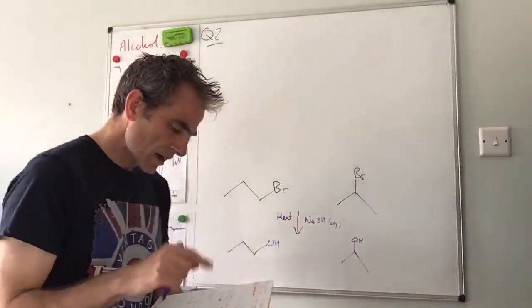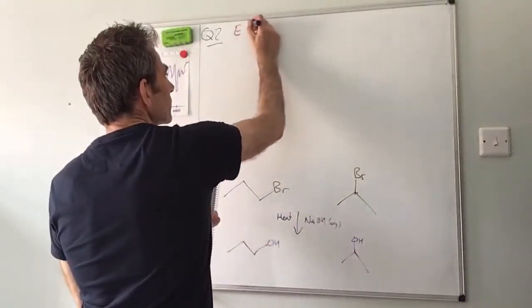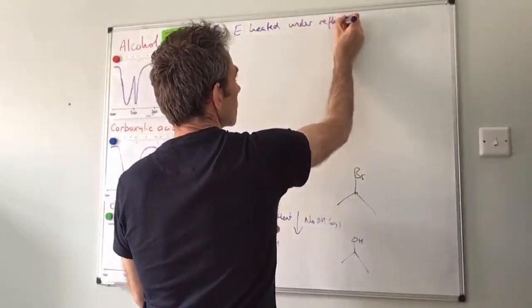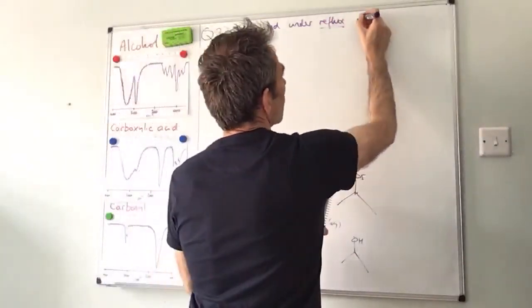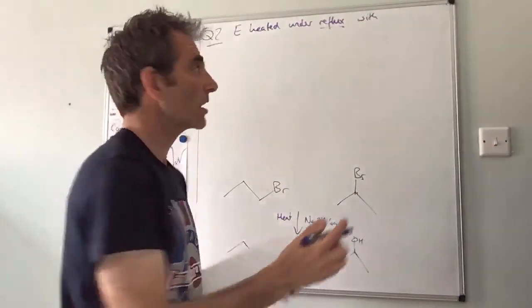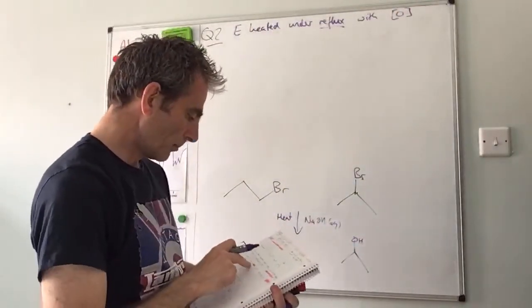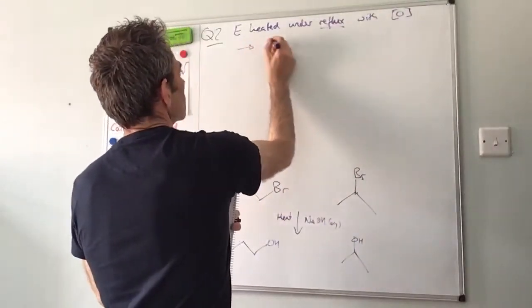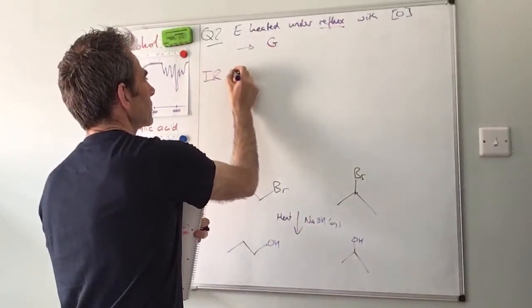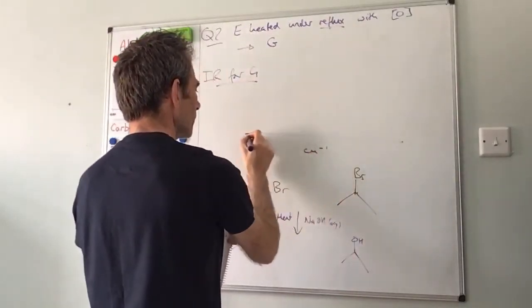It then says that E was heated under reflux - so that's obviously important - the fact that it specified reflux with acidified potassium dichromate, which is obviously an oxidizing agent. And that gave compound G. So we've got the infrared spectrum of G.